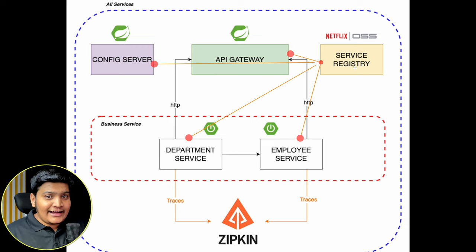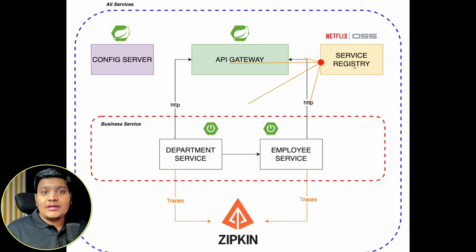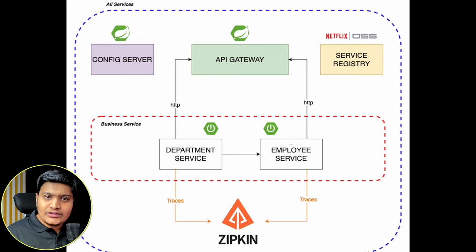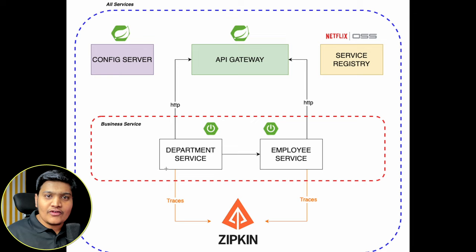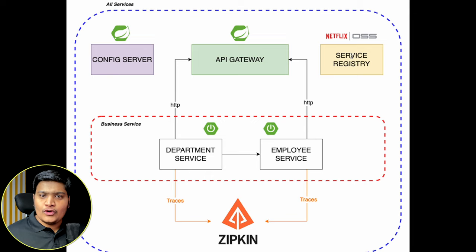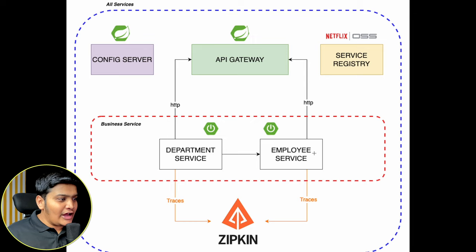The Service Registry is like a hub that knows how many services and how many instances of each service are attached to it. The main point of creating microservices is that we can scale up and scale down individual services. If I want to scale up only the Employee Service, I can do that. Service Registry will know there are five instances of Employee Service and a couple of instances of Department Service attached to it.